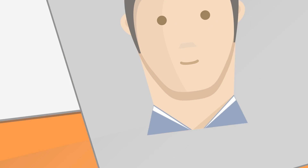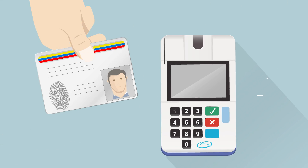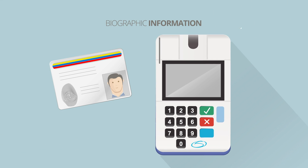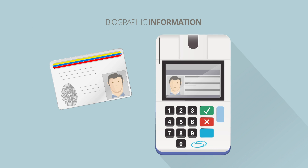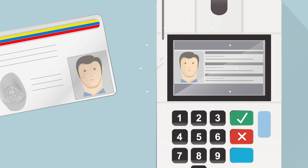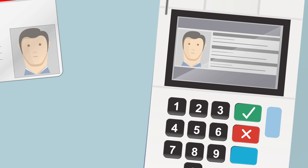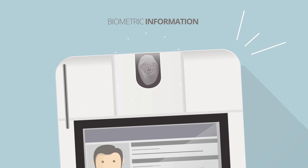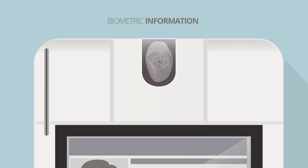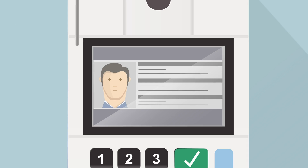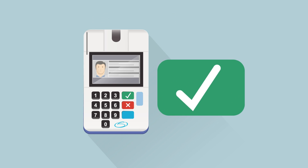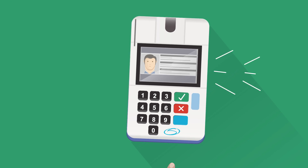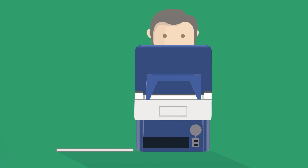The voting process begins with the authentication of the voter. By capturing your biographic and biometric information, Poll Station workers will allow the system to validate the information on your ID card and ensure your fingerprint matches the records in the database, confirming you are who you claim to be. Only after this process is completed will the Poll Station president activate your voting session.